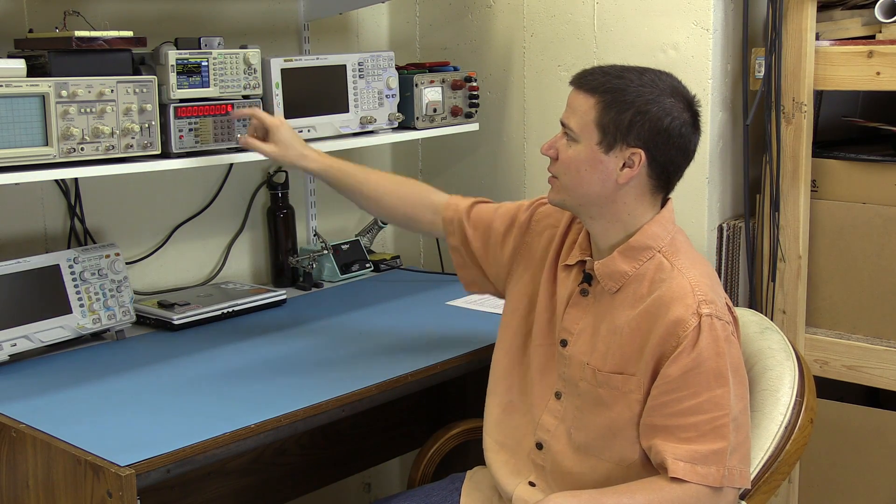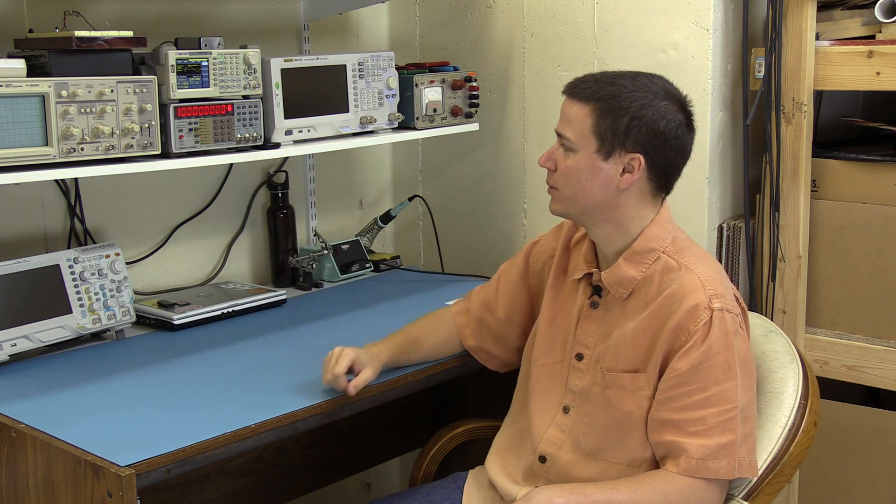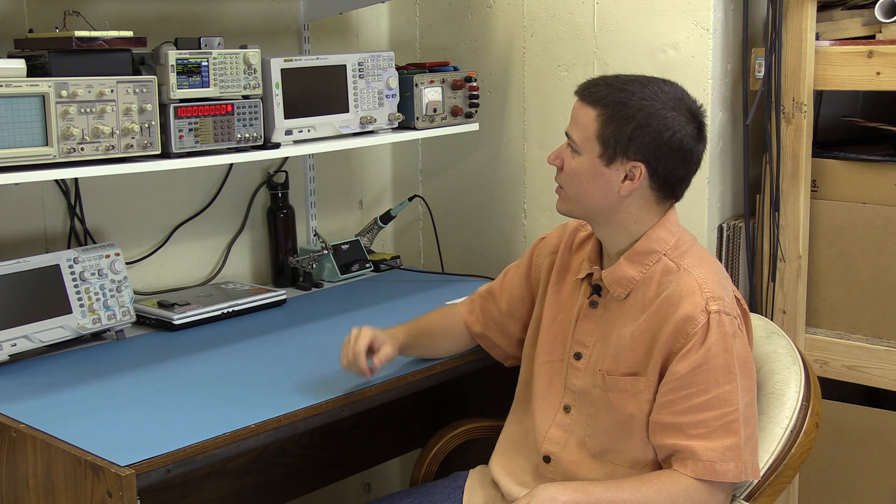I have a Siglent SDG 1025 function generator I wanted to connect an external reference to. I've also got this Raquel Dana 1992 counter that everybody likes. It's got the hopped up crystal oscillator in there with a little oven and all that. So I wanted to hook the two together.